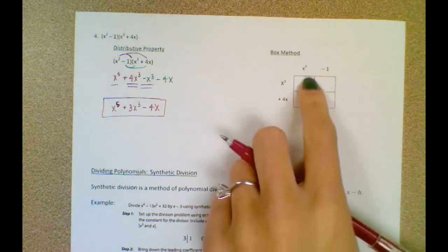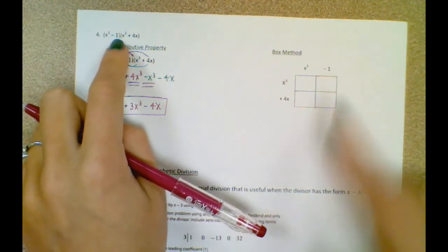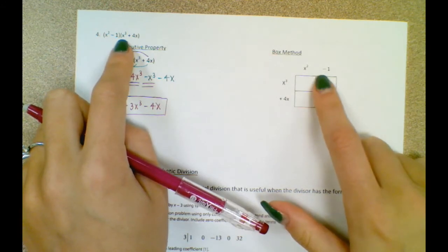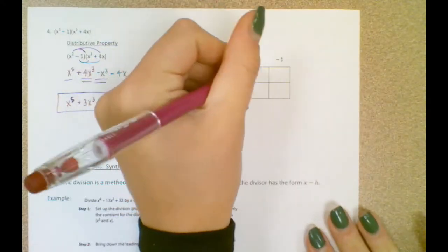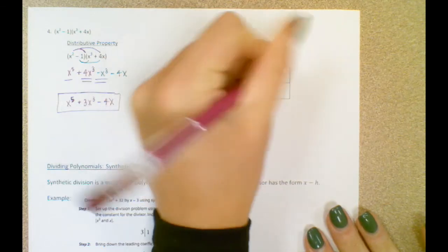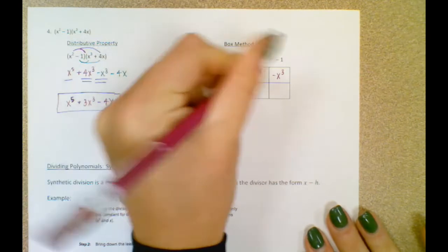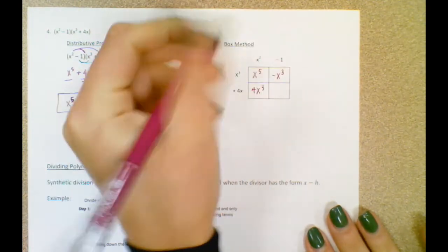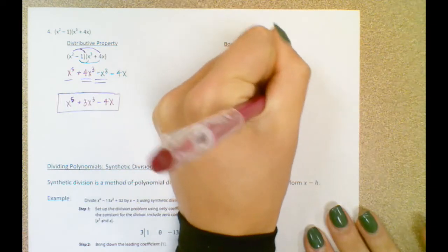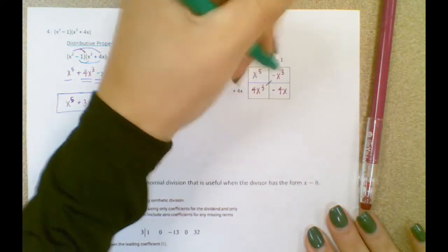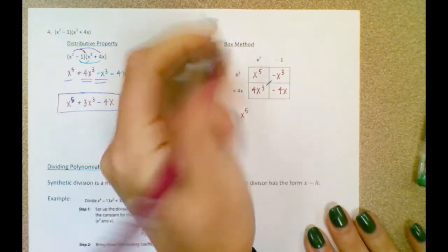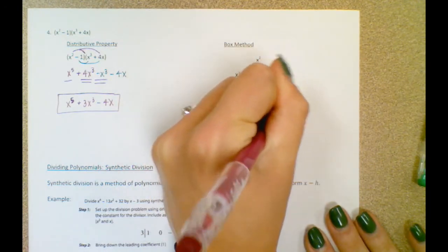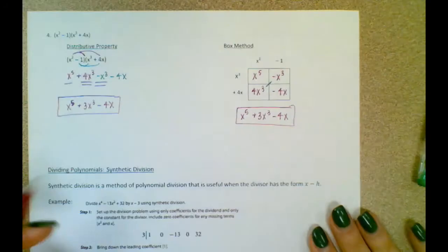Box method for the same problem: I put x squared minus 1 on top — make sure I put the negative on that 1 — and x to the third plus 4x along the side. x to the third times x squared is x to the fifth. x to the third times negative 1 is negative x to the third. 4x times x squared is 4x to the third. 4x times negative 1 is negative 4x. Notice the x to the thirds are diagonal from each other. Combine like terms: x to the fifth, 4 minus 1 is 3x to the third, and minus 4x. Write these in standard form — highest degree to lowest degree.